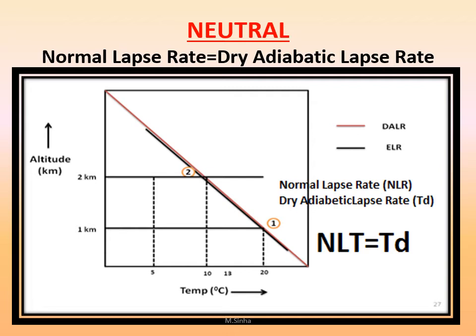There are three stages: neutral condition, stable condition, and unstable condition. In the neutral condition, the normal lapse rate and dry adiabatic lapse rate are equal. The red line shows the dry adiabatic lapse rate and the black line shows the normal lapse rate — both run parallel to each other through increasing height. There is no temperature gradient and no atmospheric disturbance. When the normal lapse rate exactly matches the dry adiabatic lapse rate, the situation is called the neutral condition.